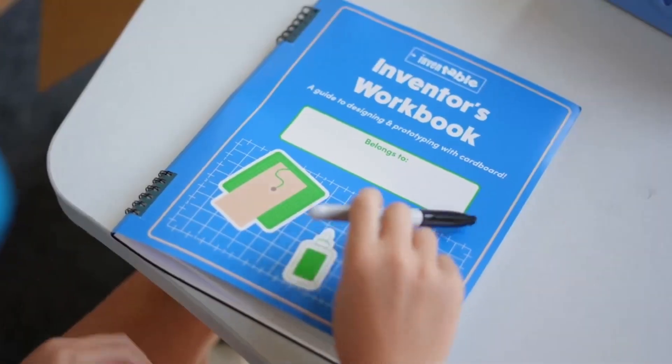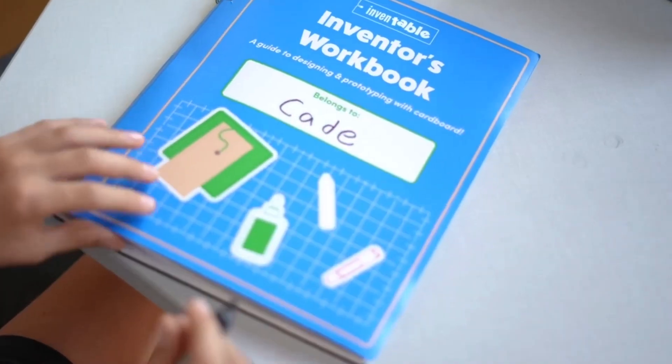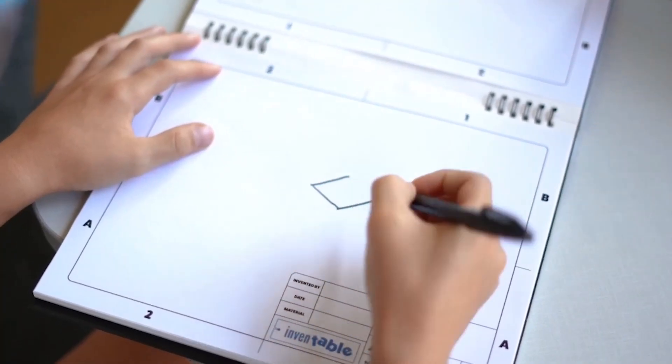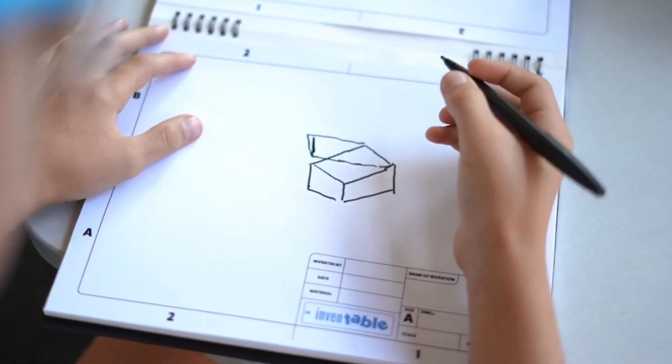The tool won't pull in or tangle hair that might fall over it. In our STEM bundle, the Inventable also comes with a workbook that teaches you how to think in 3D and has engineering drawing pages to sketch your ideas.